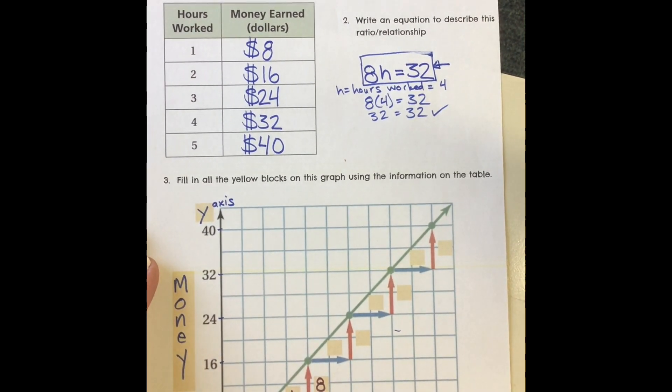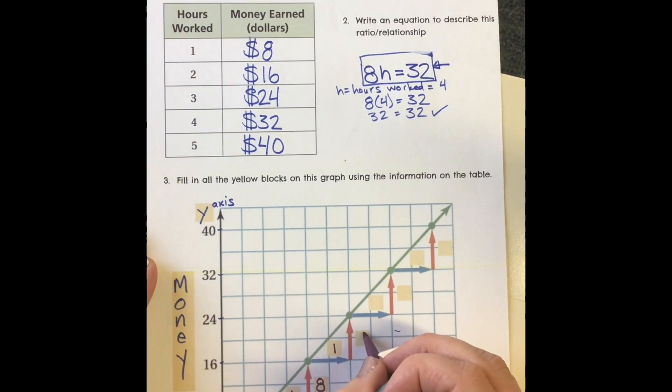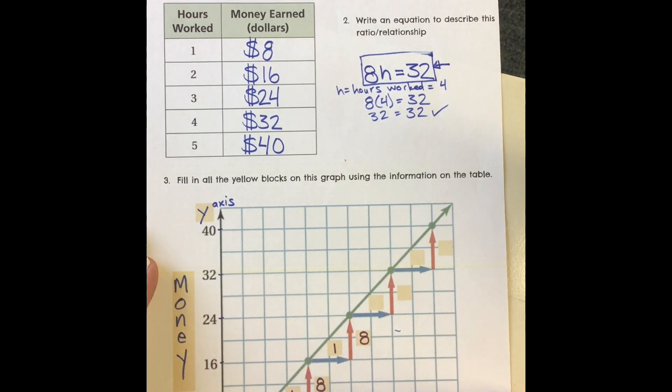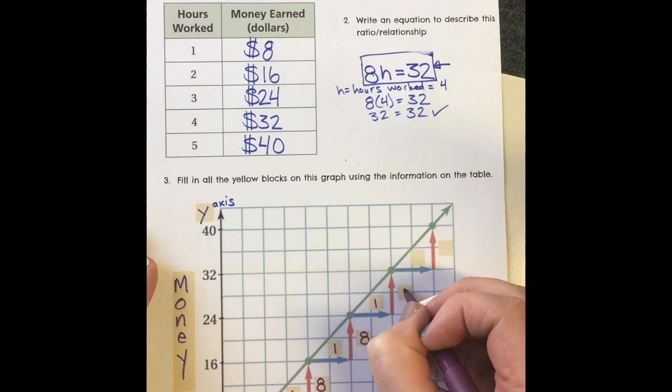Notice when I went to 2, it was $16. You can see the pattern here. Each time, I went across for another hour, then I earned another $8. I can see that pattern and just keep going.